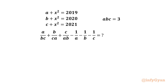We have: a plus x² equals 2019, b plus x² equals 2020, c plus x² equals 2021, given that abc equals 3. Then we have to evaluate the expression: a/(bc) plus b/(ca) plus c/(ab) minus 1/a minus 1/b minus 1/c.